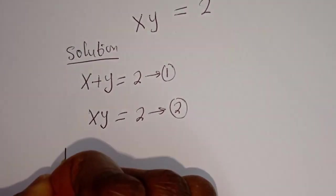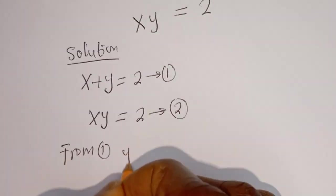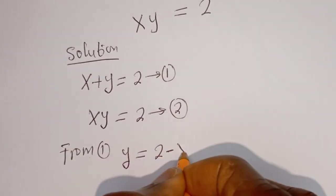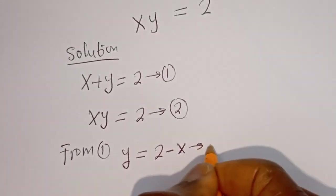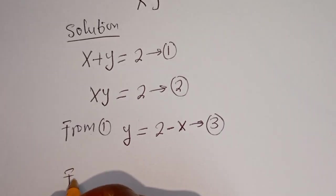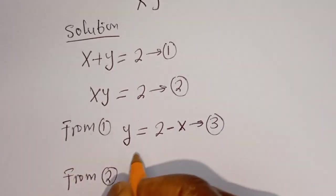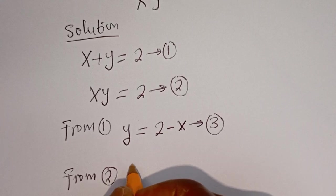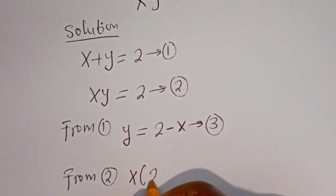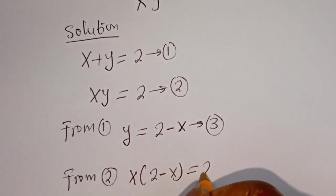From equation 1, y is equal to 2 minus s — let's call this equation 3. Also from equation 2, we have s times (2 minus s) is equal to 2.